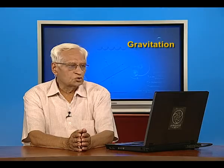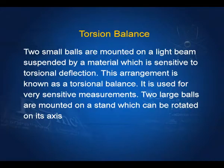The torsion balance consists of two small balls mounted on a light beam suspended by a material which is sensitive to torsional deflection. This arrangement is known as a torsion balance and is used for very sensitive measurements. Two large balls are mounted on a stand which can be rotated on its axis.